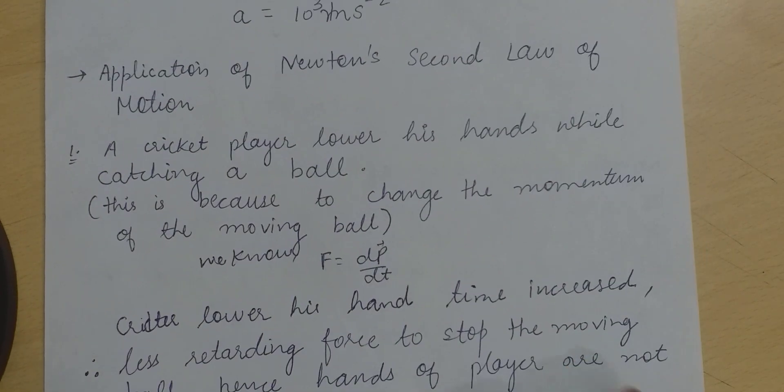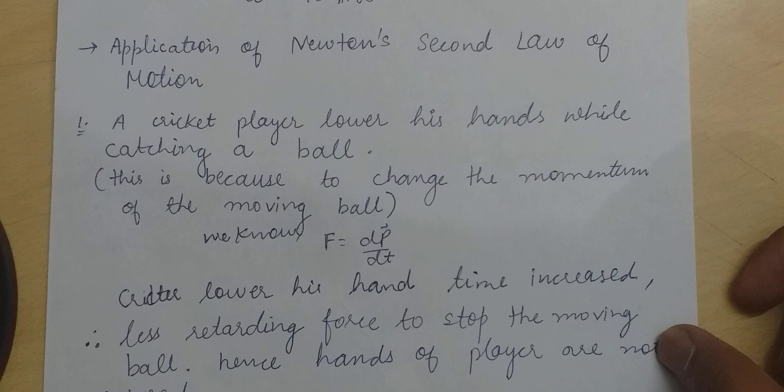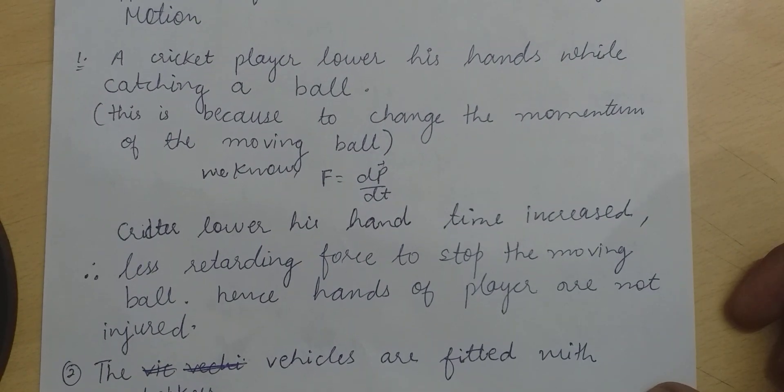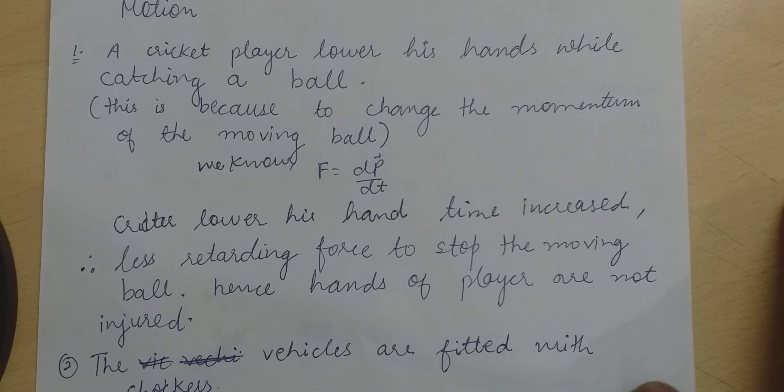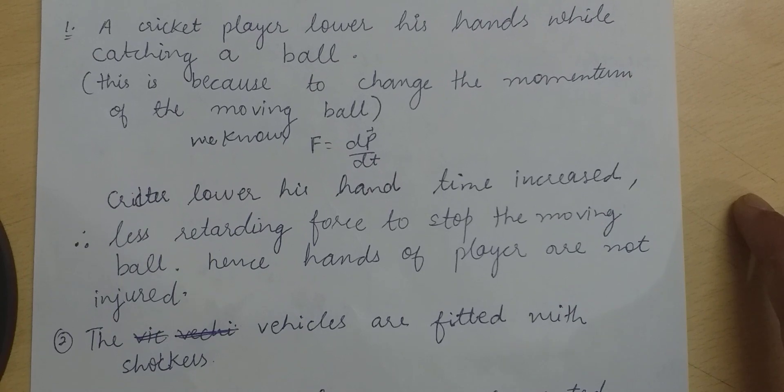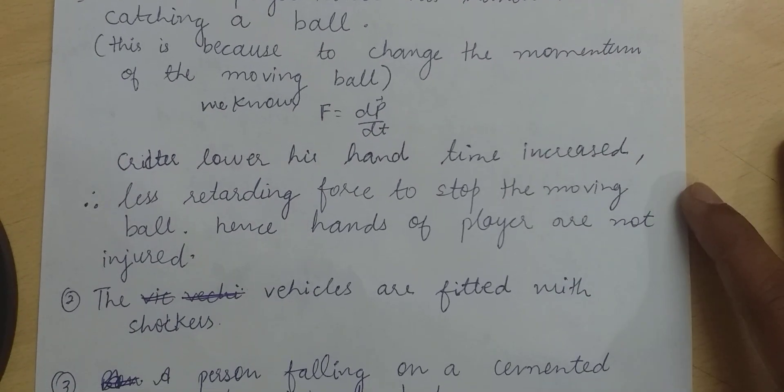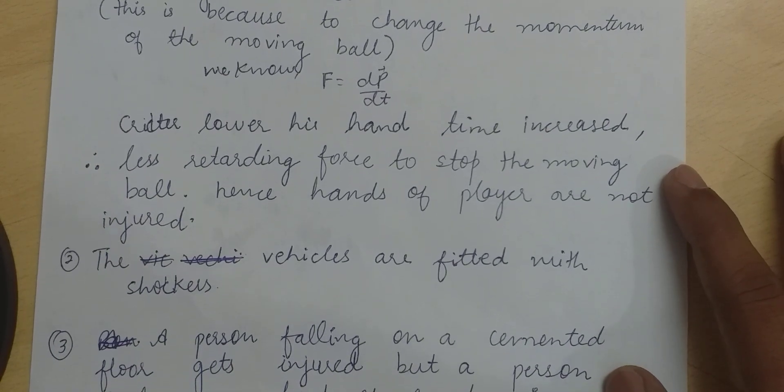Application of Newton's second law of motion: a cricket player lowers his hands while catching a ball. This is because to change the momentum of the moving ball. We know F equal to dp vector upon dt. Cricketer lowers his hand so time increased, so that less retarding force is needed to stop the moving ball, hence hands of the player are not injured.